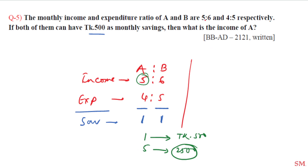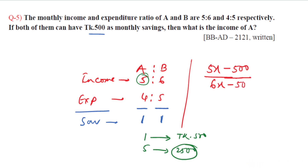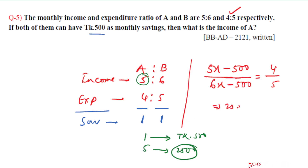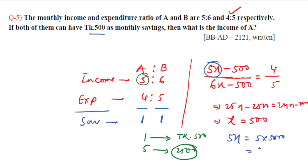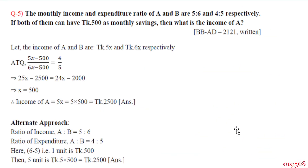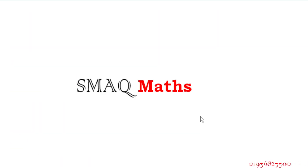Her income is 5X and expenditure is 6X. The expenditure ratio is 4 to 5. Cross multiplying: 5 times 5 equals 25X minus 2500 and 24X minus 2000. So 25X minus 24X gives X equals 500. Therefore the initial income is 5X equals 5 times 500 equals 2500 taka. So the answer is 2500 taka. Thanks for watching.